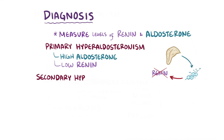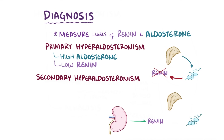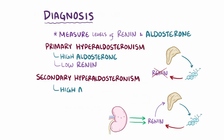In secondary hyperaldosteronism, on the other hand, the main problem is that there's too much renin produced by the juxtaglomerular cells of the kidneys, so even though aldosterone is inhibiting renin secretion, renin production is still being stimulated by those cells. This means that there's both high levels of aldosterone and high levels of renin.